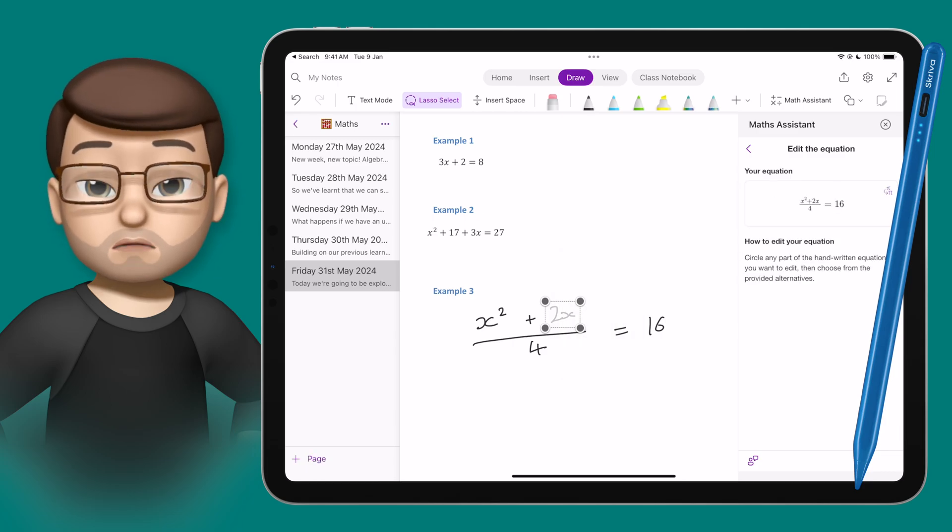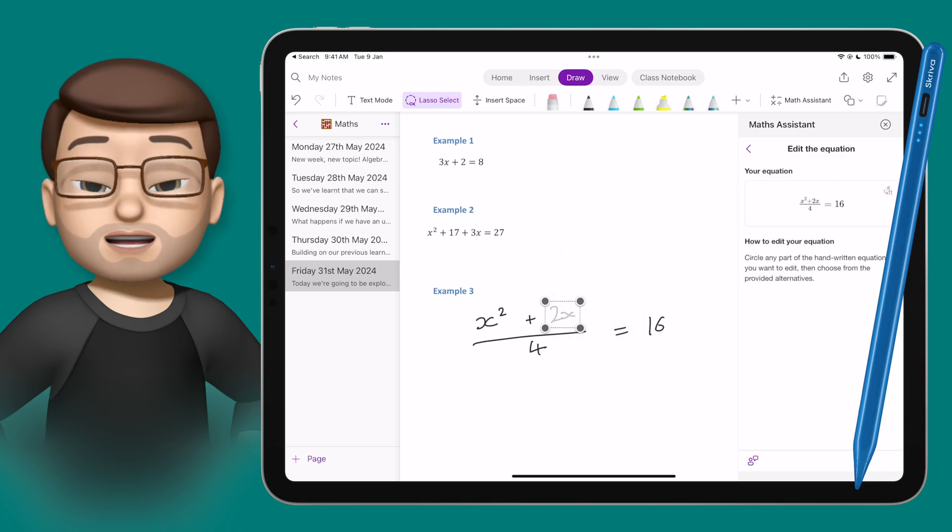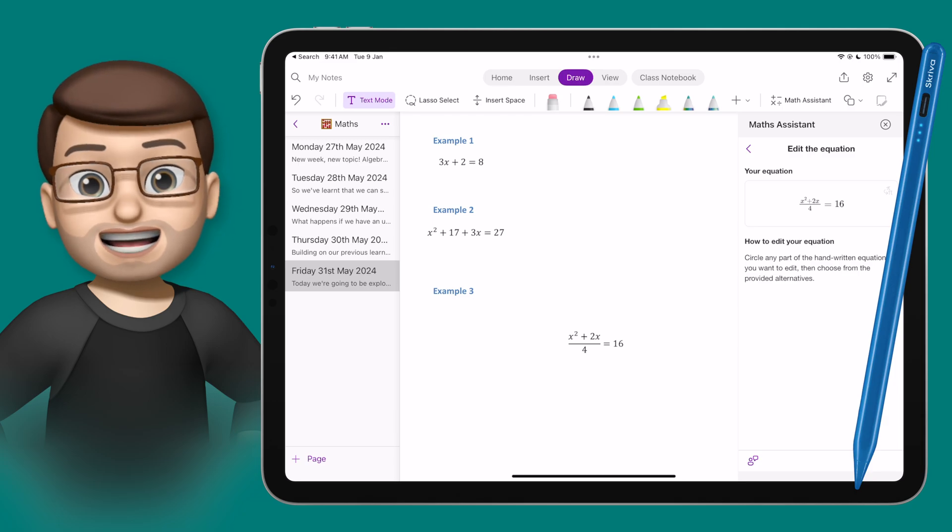And then whatever I select, whatever it was meant to be, it will then adjust the equation for me, so that when I then convert it into text on my page, I know that it's going to be the accurate expression.